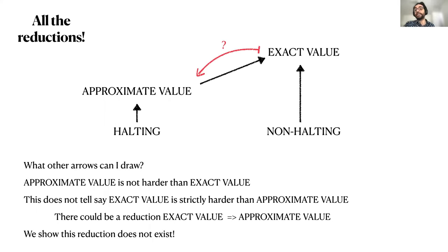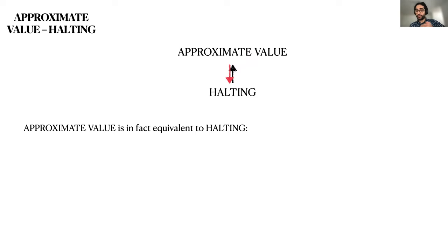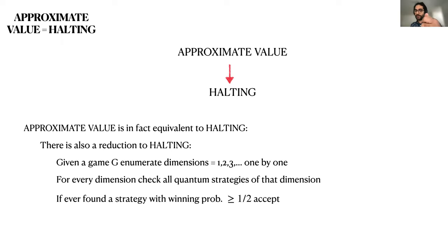What other arrows can we draw? Well, one observation is that we can easily solve the approximate value problem if we could solve the exact value problem. So trivially there is a reduction from approximate value to exact value. But this doesn't tell me that exact value is strictly harder than approximate value — for all we know, there could be a non-trivial reduction from exact value to approximate value, in which case the two problems would have equivalent hardness. What I'm going to do in the next slide is to refute this possibility. It turns out there is a reduction from approximate value to halting as well, so these two problems — halting and approximate value — are really equivalent.